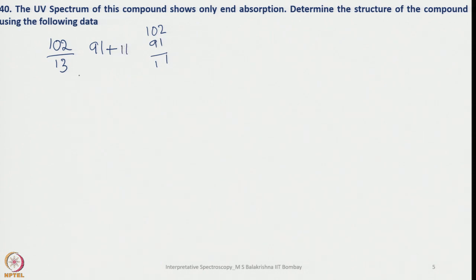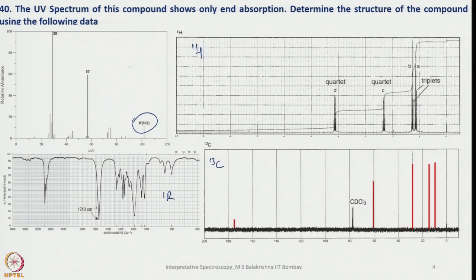That means basically C7, and H will be 7 plus 18. Going back to the IR spectrum, we have a very strong peak at 1740 and also a peak around 1200. This indicates both C=O (carbonyl) and the ester group are present.